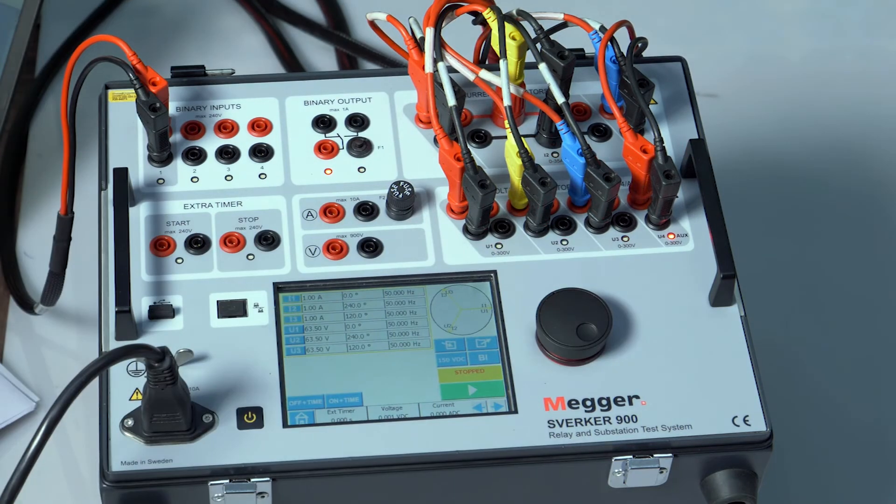Let me trigger a disturbance recorder using the manual trigger option. Disturbance recorder. Manual trigger. Already there are 3 manual triggers. I should be getting the 4th one. So the 4th one is triggered.